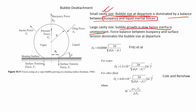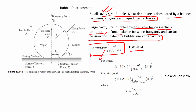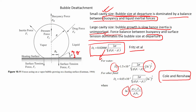If the cavity size is large, then bubble growth is slow and inertia is unimportant — the force balance between buoyancy and surface tension determines bubble size at departure. Fritz et al. found that bubble size at departure is given by a relationship involving the contact angle θ. Cole and Rohsenow found that droplet size at departure is also a function of the Jacob number — defined as sensible enthalpy divided by latent heat. Both studies show that bubble size at departure is either buoyancy-inertia dominated or buoyancy-surface tension dominated depending on cavity size and other factors.